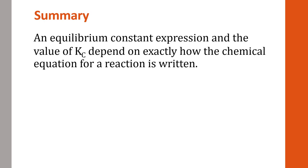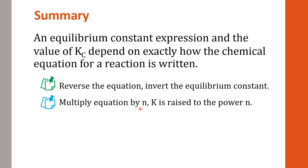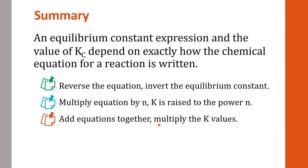In summary, an equilibrium constant expression depends on exactly how the chemical equation is written. If you reverse the equation, the equilibrium constant is inverted. If you multiply the equation by any factor n, the new K is raised to the power n. If we add equations together, the final K is the multiplication of all the individual K values. Hopefully you understand how to write K for the modified equation.